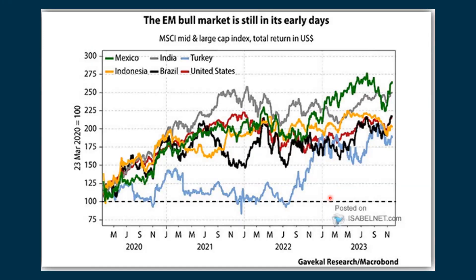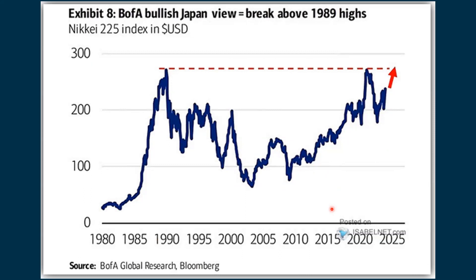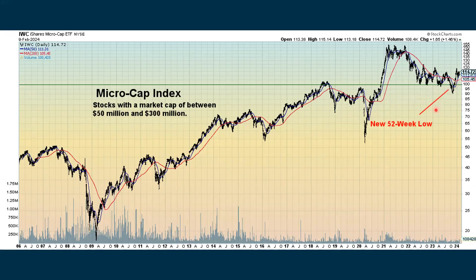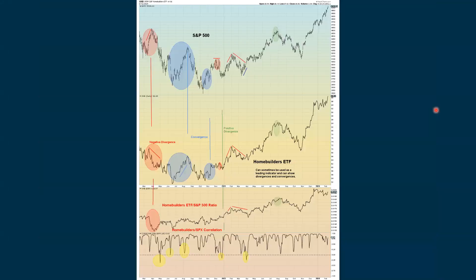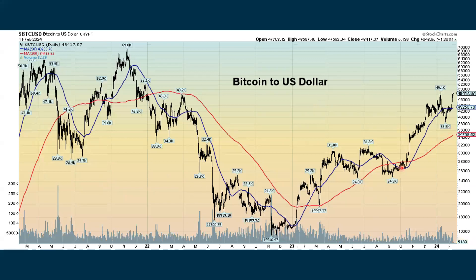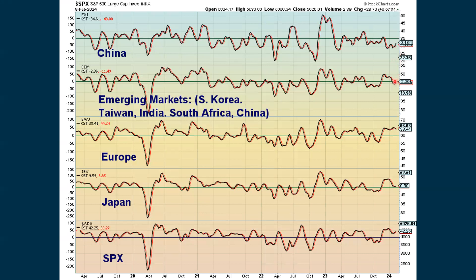Looking at some outdated company ETFs for different international types. Included as well is a Bank of America chart that is rather bullish on the Japanese stock market — they're anticipating going back to the highs set in 1989. That hasn't quite happened yet but that's their projection. Micro caps are above 100 and also in an uptrend. Looking at the homebuilders ETF — we are in an uptrend but not getting anything all that useful from it. Bitcoin is in an uptrend — it started to fall back but has been coming back up lately. China is showing some improvement and emerging markets are starting to recover.